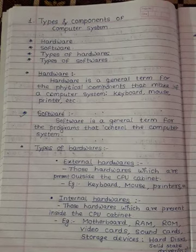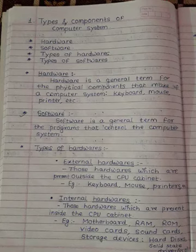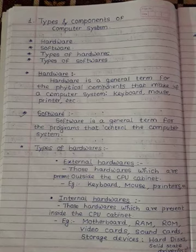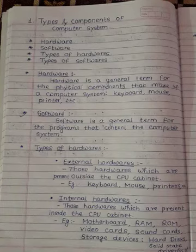Hardware. Hardware is a general term for the physical components that make up a computer system. Hardware is a physical component that can be touched and felt. Examples are keyboard, mouse, and printer.